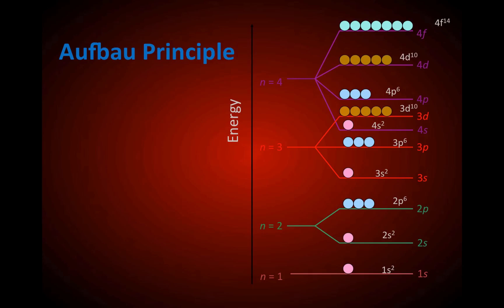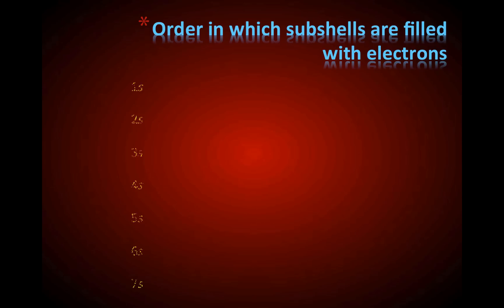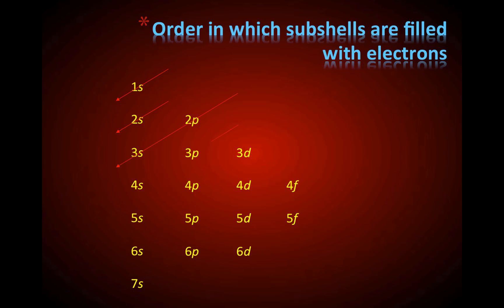According to Aufbau, electrons fill the lowest energy levels and lowest energy sublevels first. To help remember the order in which electrons fill, there is the diagonal rule. You can make a diagram to determine which energy levels and sublevels are filled first. Drawing in the diagonals gives the order: 1S, 2S, 2P, 3S, 3P, 4S, 3D, 4P, 5S, 4D, 5P, 6S, 4F, 5D, 6P, 7S, 5F, 6D. This allows you to determine the order in which sublevels fill.